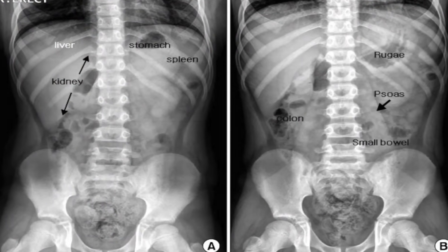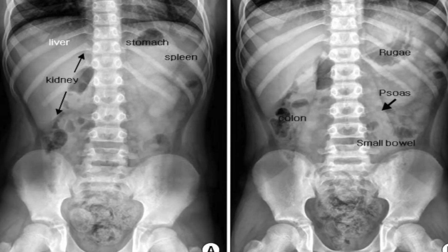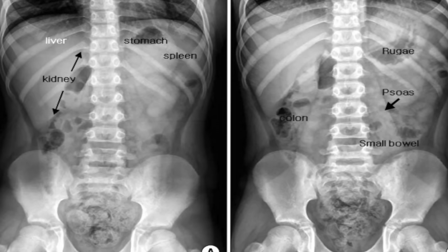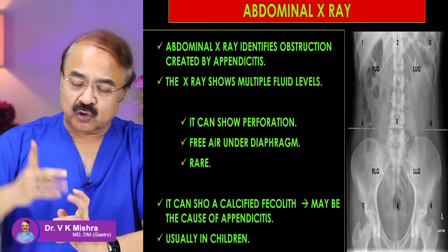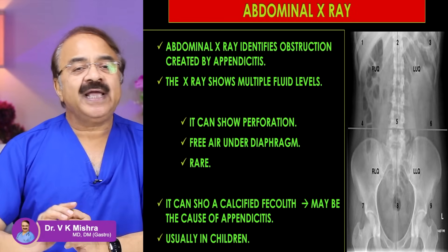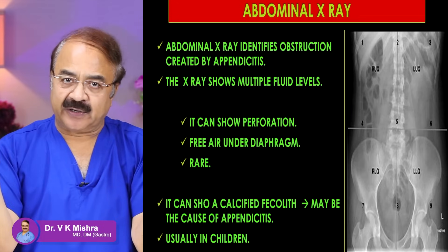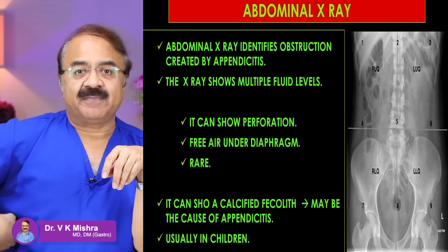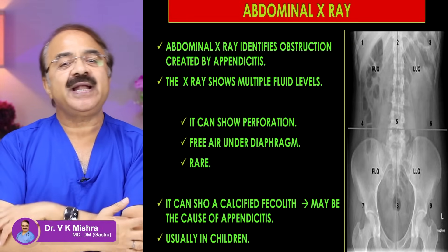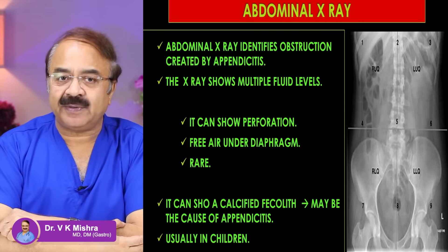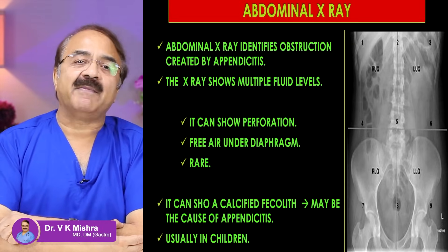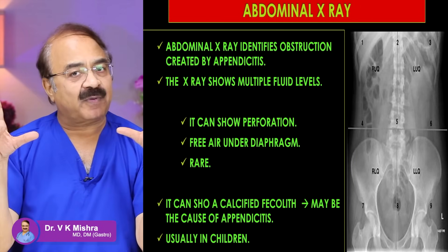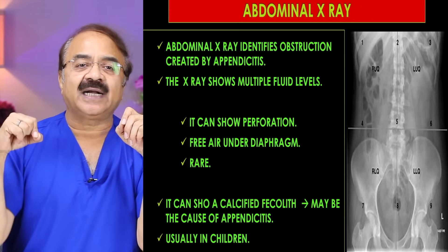That's number 1. कभी-कभी complication में ऐसा हो जाता है कि appendix burst हो जाता है - फट जाता है या उसमें perforation हो जाता है। अगर appendicitis में perforation होगा तो उसमें से air leak हो जाएगी, और यह perforation peritonitis हो जाएगी। यह air कभी-कभी diaphragm के नीचे दिखाई देने लगेगी plain X-ray में। It's rarely visible क्योंकि जो air leak होती है उसकी amount ज़्यादा नहीं होती, लेकिन यह बात सही है कि अगर perforation हुआ है और air under diaphragm है तो यह readily confirm करती है कि perforation peritonitis है।